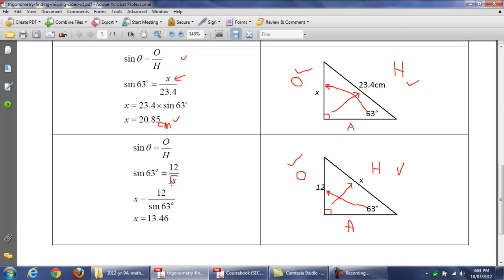Now, notice this time the X is on the bottom. Remember the X on top? This time it's on the bottom. So, here's a little trick. We swap this with that. And we get X equals 12 over sine 63.